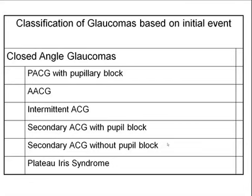Plateau iris syndrome is an anatomical configuration where the iris processes are rotated anteriorly. This results in a typical sinusoidal wave on gonioscopy seen with a slit beam placed at an angle. These patients typically have a very steep and anterior approach to the iris in the periphery.